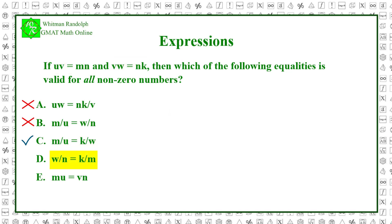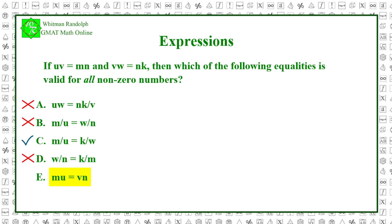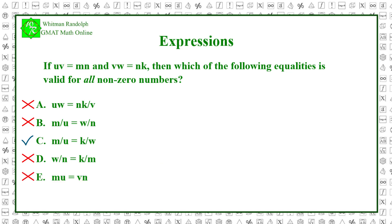Suppose answer D is true: w over n equals k over m. From vw equals nk, we get w over n equals k over v. So w over n equals k over m implies m equals v, which is not necessarily true — so answer D is invalid. Suppose answer E is true: mu equals vn. This implies m equals vn over u. Substituting into uv equals mn, we get uv equals vn squared over u, or u squared equals n squared, which is not necessarily true. Therefore answer E is also invalid. So the correct answer is C.